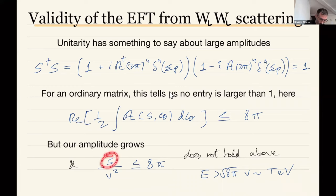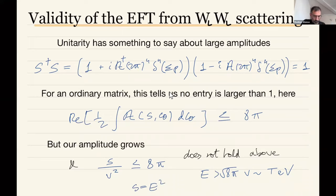This integral is trivial because we had no scattering angle in our amplitude, so it just returns the amplitude itself. We can translate this unitarity bound into a bound on s over v squared. As long as energy is low enough this is fine and consistent, but as the center-of-mass energy grows — which we can write as E squared — this relation is violated if you go high enough in energy.